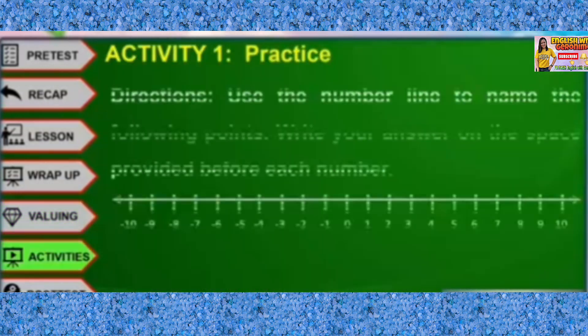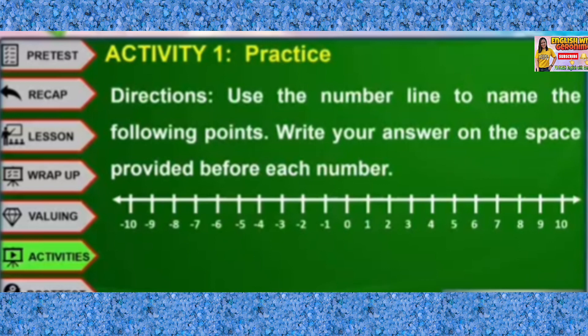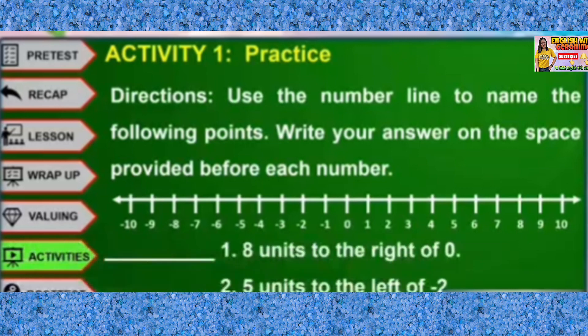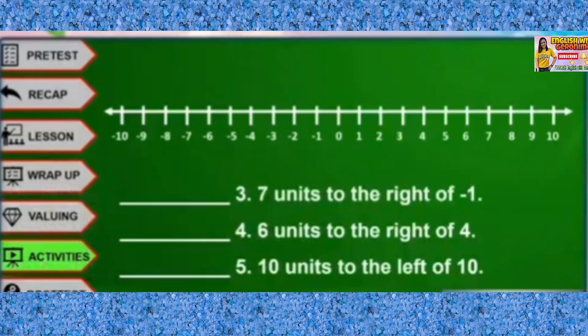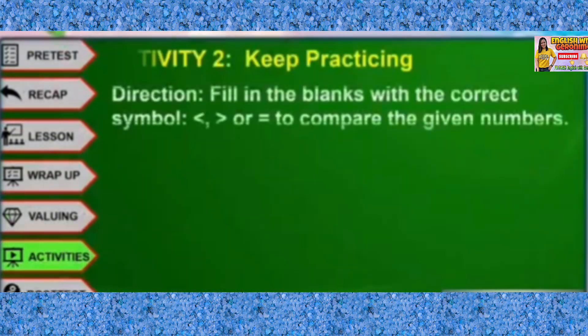Activity 1. Practice. Use the number line to name the following points. Write your answer on the space provided before each number. Activity 2. Keep practicing. Fill in the blanks with the correct symbol: less than, greater than, or equal to, to compare the given numbers.